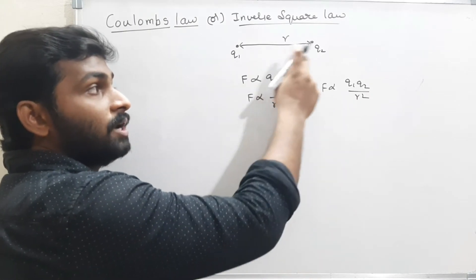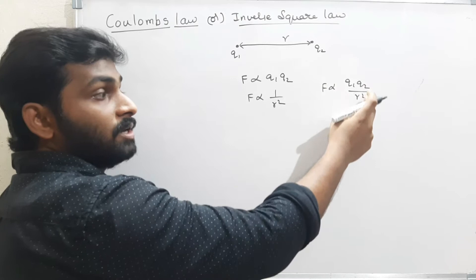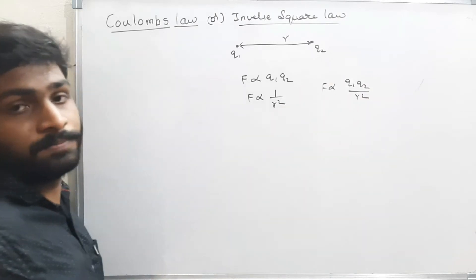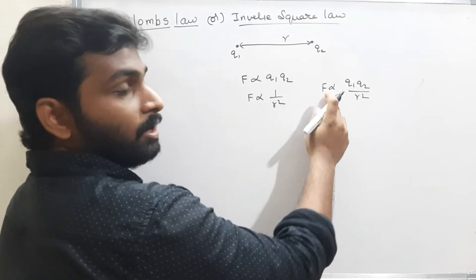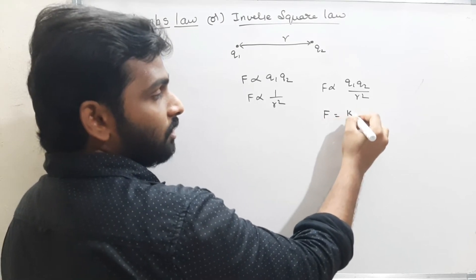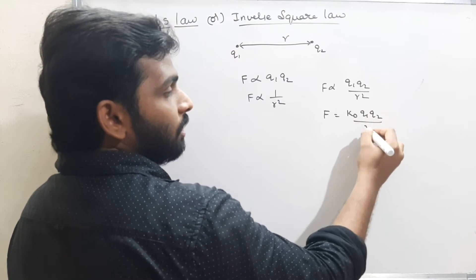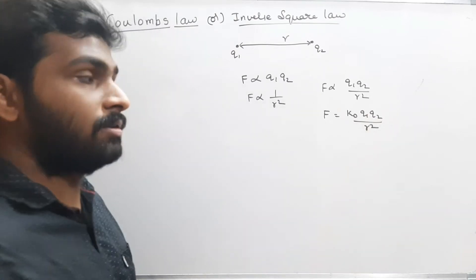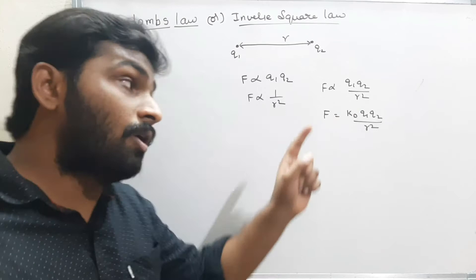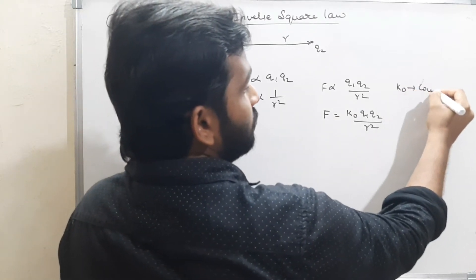To remove this proportionality, I have to add a constant. I am adding the constant K0, so the force equals K0 times Q1 Q2 divided by R squared. K0 is the proportionality constant, also known as Coulomb's constant.